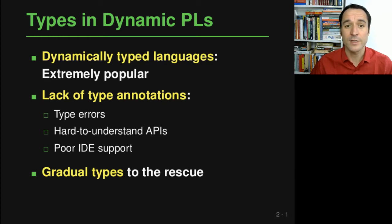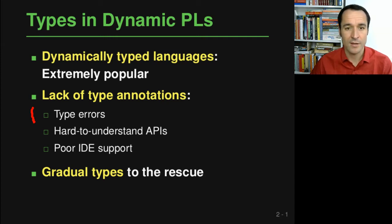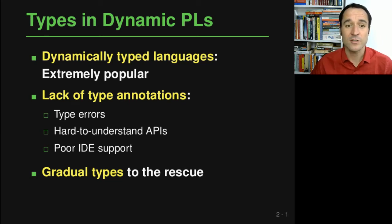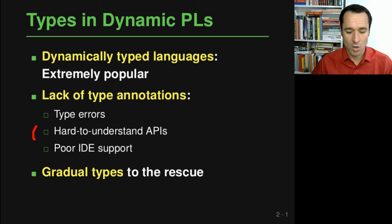The most obvious problem is that you may have type errors that are not statically detected, but maybe only discovered once your program is running. Type annotations are also useful to understand APIs — without them, APIs are harder to understand. Finally, the lack of type annotations leads to poor IDE support, because IDEs can make better suggestions if they know about the types of functions and variables.